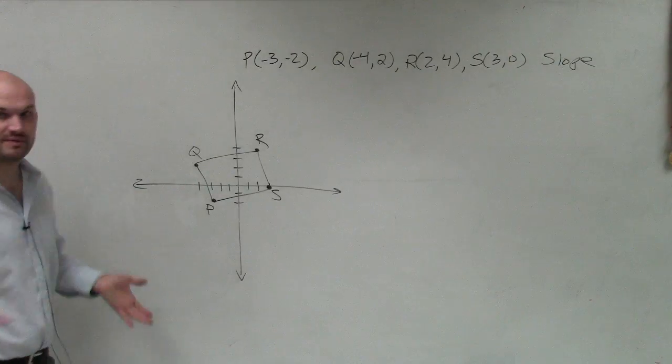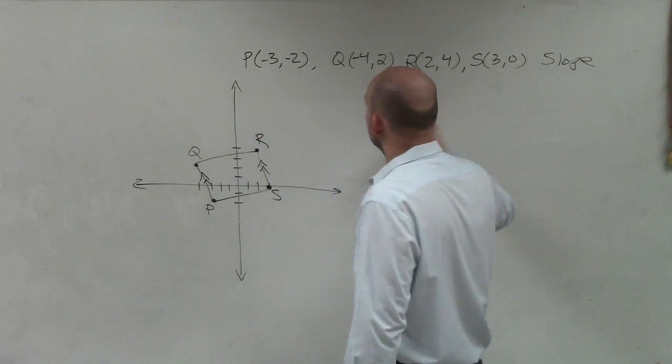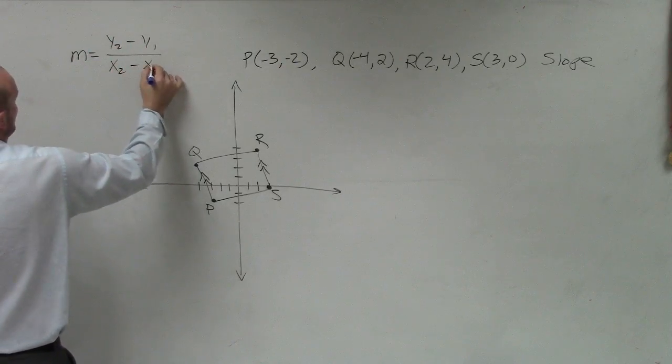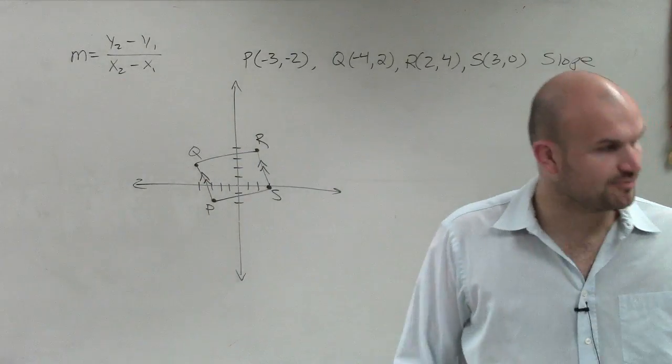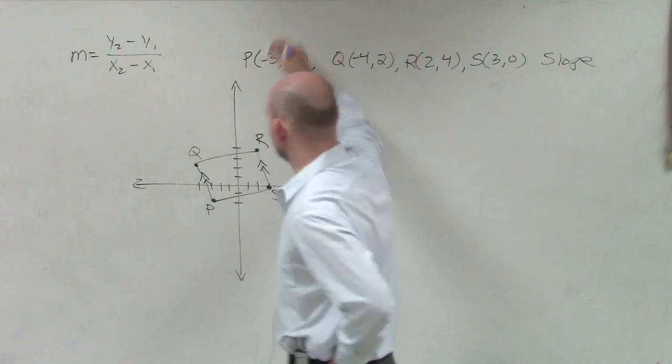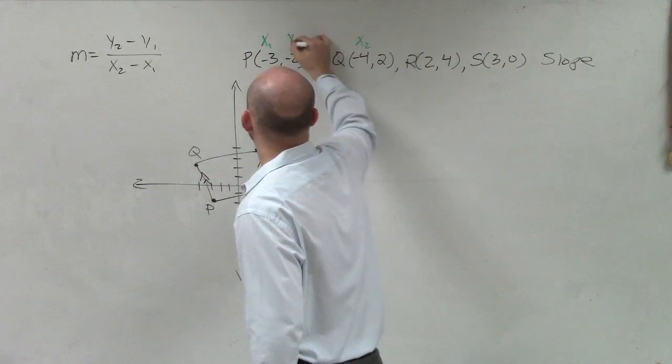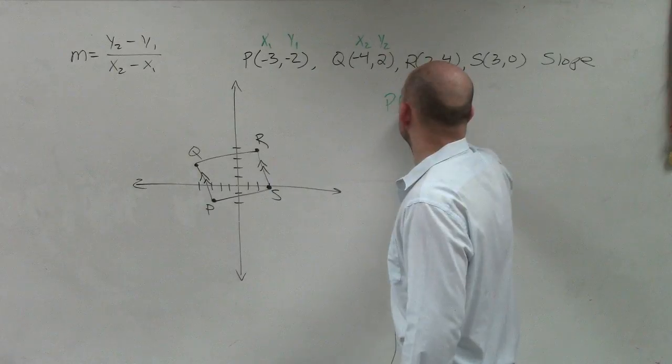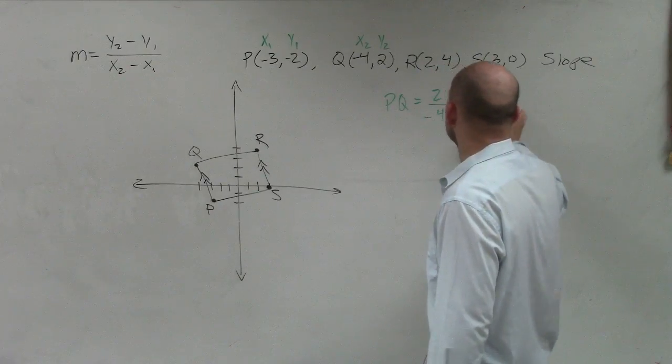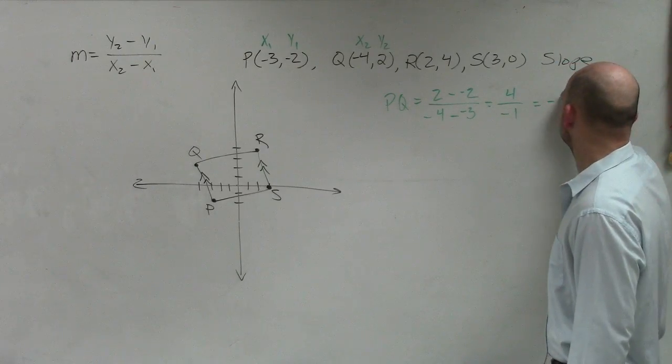To show that this is a rectangle, the first thing we need to do is show that these two sides are parallel. To do that, we need to find the slope. The slope formula is y2 minus y1 over x2 minus x1. You will not be provided that formula. To find the slope between PQ, I'll label these x1, x2, y1, y2. So PQ is 2 minus negative 2 over negative 4 minus negative 3. That becomes 4 over negative 1, which equals negative 4.